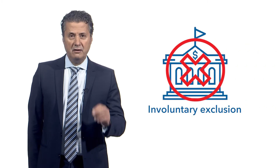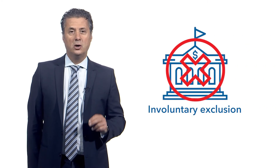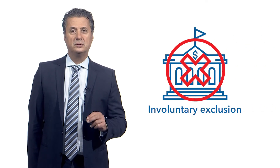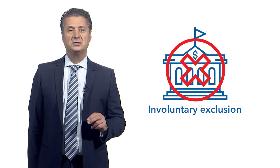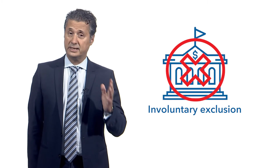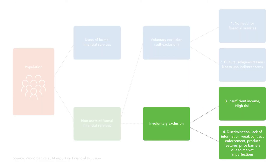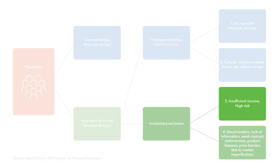Who are the involuntarily excluded? The main policy arena will be in involuntary exclusion — those individuals and firms that would like to use financial services but cannot. Out of these, some have insufficient income or are of such a high risk that a prudent financial system will exclude them.